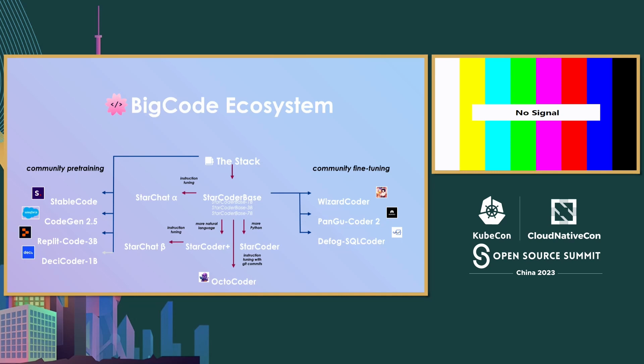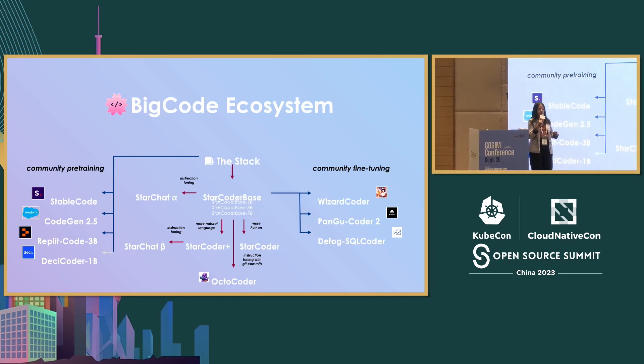The family tree became a big ecosystem. Because we released The Stack dataset, it has become kind of the default dataset that people use to train their code models. For example, Salesforce, Stability, Replit, and DeepMind all use The Stack to train their code generation models. The community also took StarCoder and fine-tuned it to get more powerful models — for example, the WizardLM team fine-tuned StarCoder to get WizardCoder. There's also PanGu-Coder 2 from Huawei, and then there's the Fog SQL coder, which is the best SQL chat assistant out there. This is what happens when you open source your dataset and your model — you give people tools to build on top and make things better.